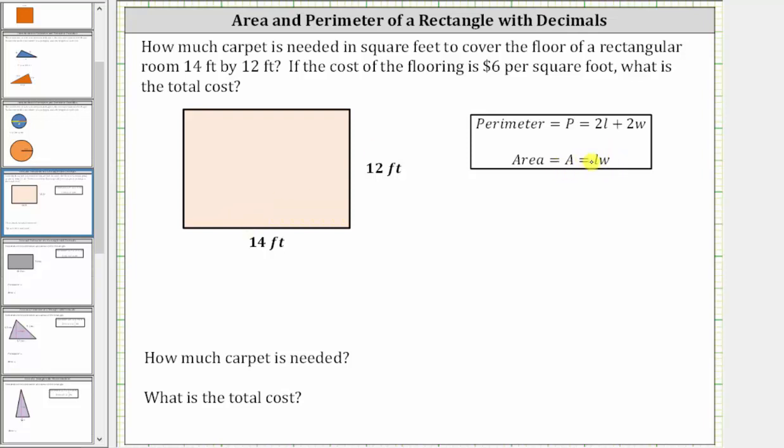Where for a rectangle, L is the longer side and W is the shorter side. So for this rectangle, or this room, the length L is 14 feet and the width W is 12 feet.